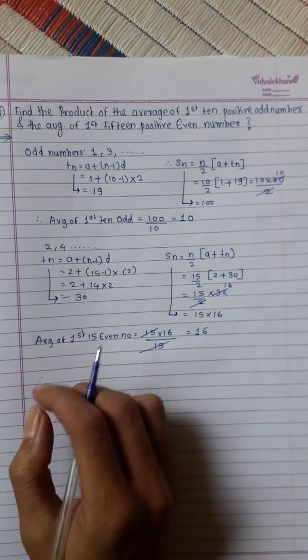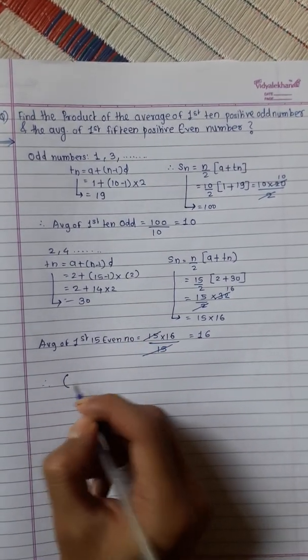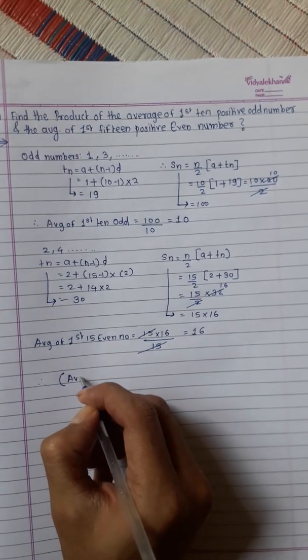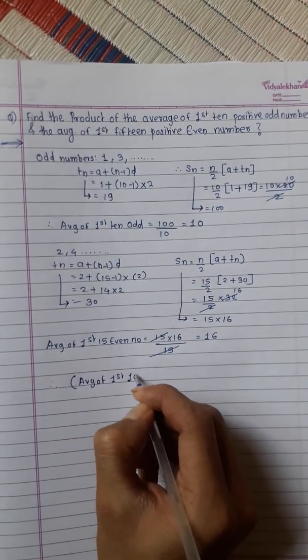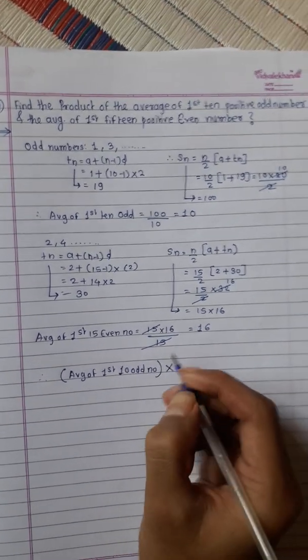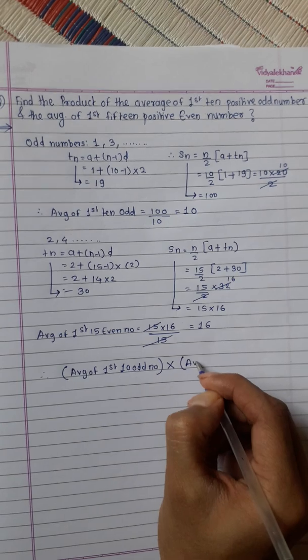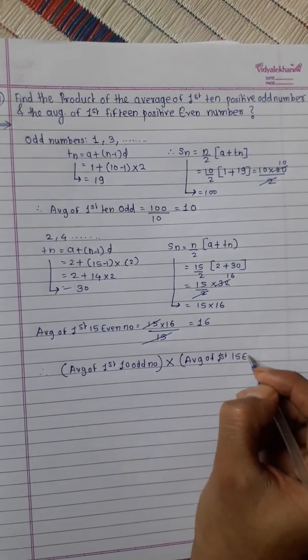Therefore, in this question, it is asked that product of the average means average of first 10 odd numbers multiplied by average of first 15 even numbers.